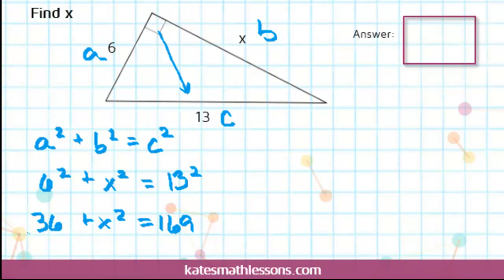Once you've simplified both sides, we need to start to try to get X by itself. That means we need to get rid of this plus 36 over here. We can do that by subtracting it from both sides. That makes it cancel out over on the left, and that leaves us with X squared equals 133.